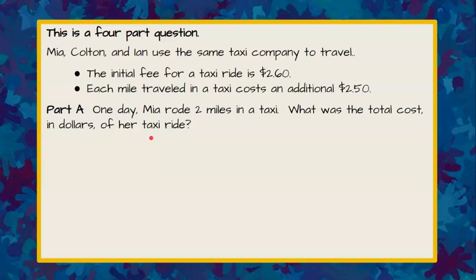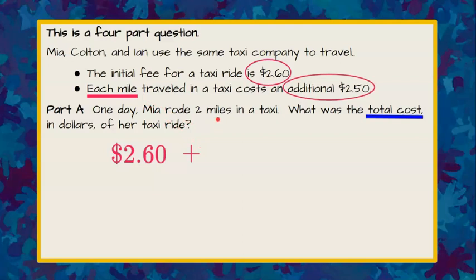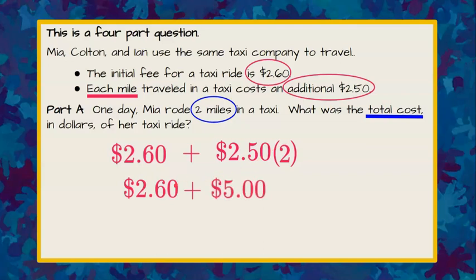Welcome back. So we know that we're finding Maya's total cost. Maya spent $2.60 to get into her taxi and then in addition to that $2.50 for each mile. So we say 2.50 times the number of miles she went which is two. 2.50 times two is $5 with the additional $2.60. Add that together and we get that Maya paid $7.60 for her taxi ride.